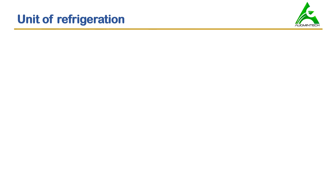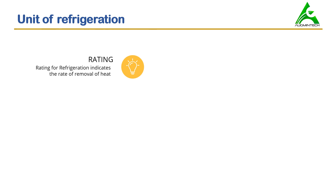Unit of refrigeration. Any physical quantity has to be measured in some units, and in the same way refrigeration is also measured in some units. In this part, we'll talk about the units and terms associated with refrigeration. The first one is rating. Rating for refrigeration indicates the rate of removal of heat. So if the rating is high, the rate of removal of heat by this system will be more compared to any other system with a lower rating. As a whole, we can say rating gives us the idea of how fast a system is able to cool a space — higher the rating, faster the cooling.